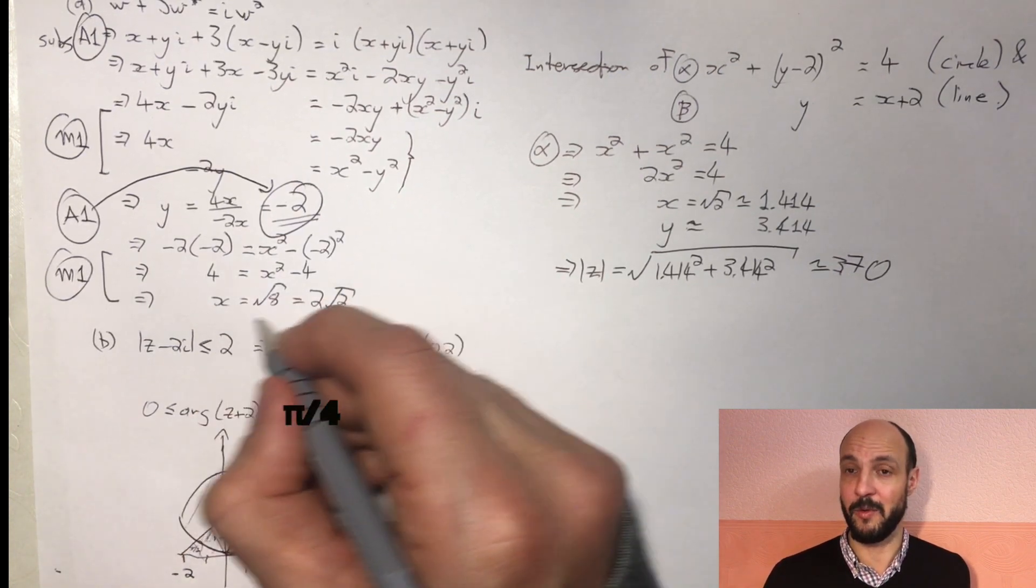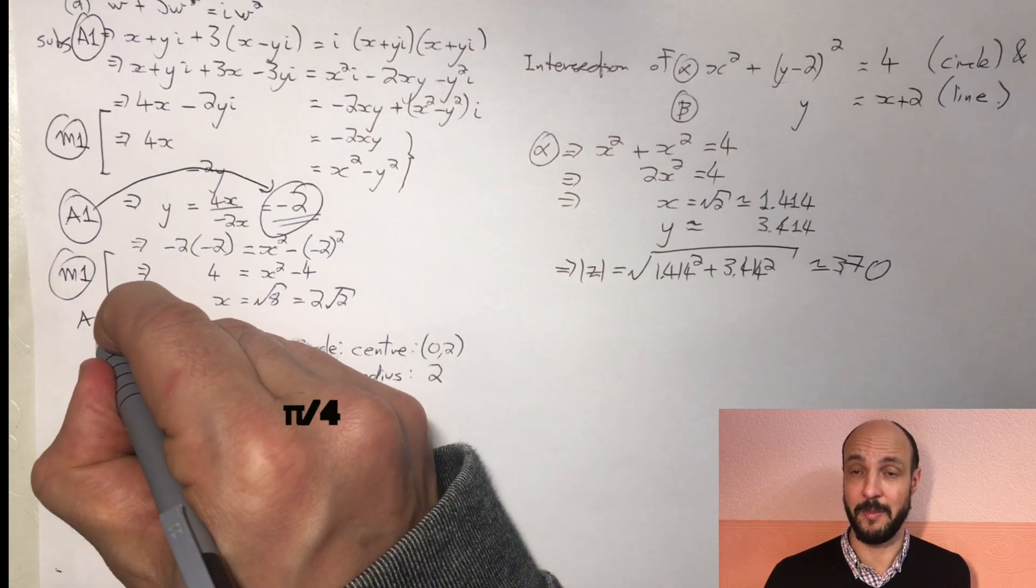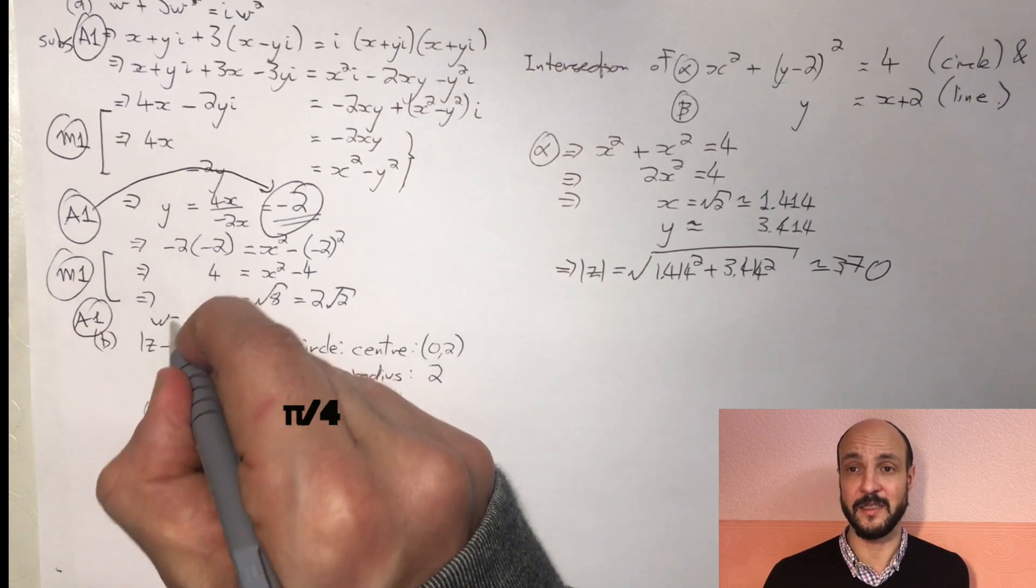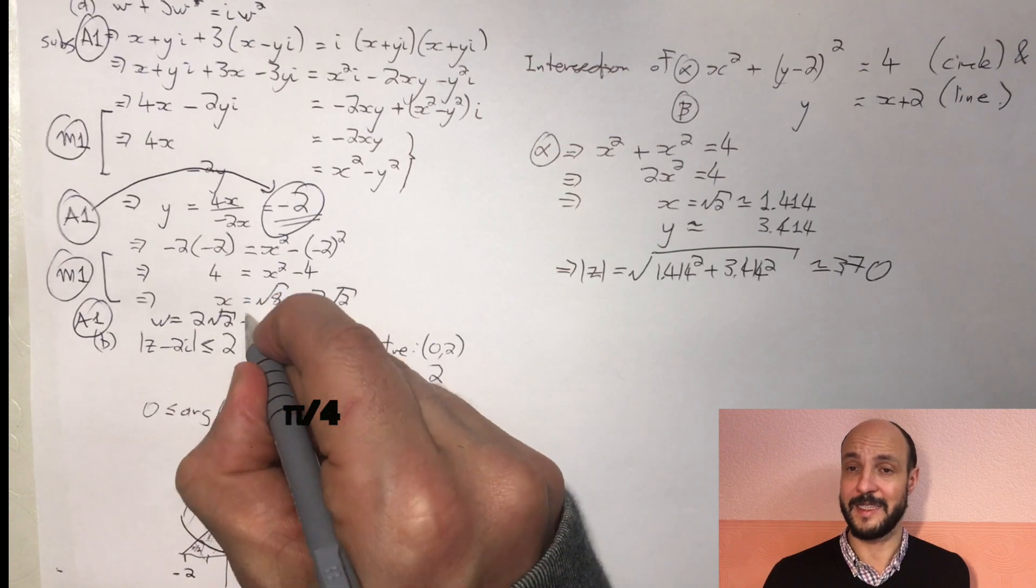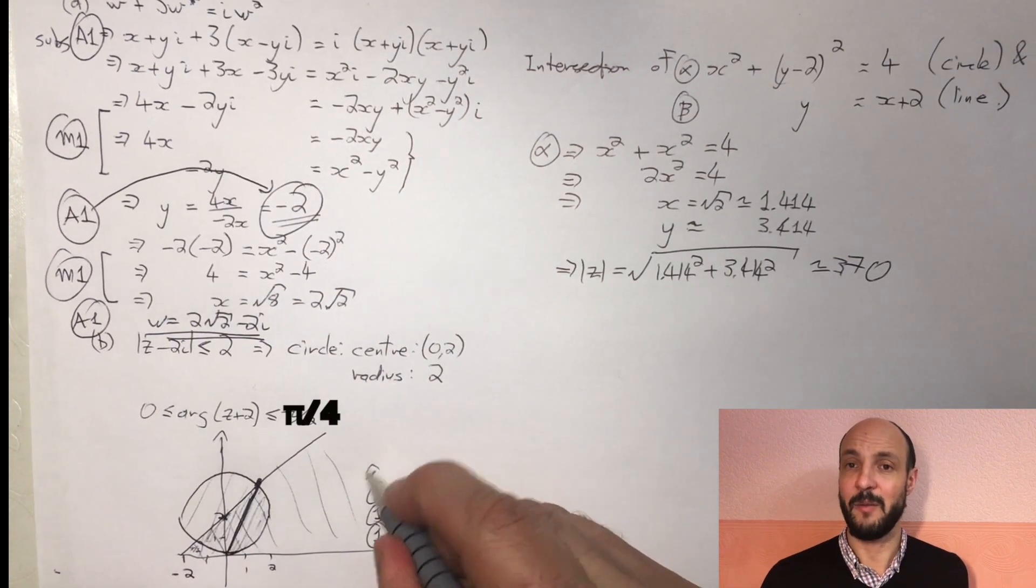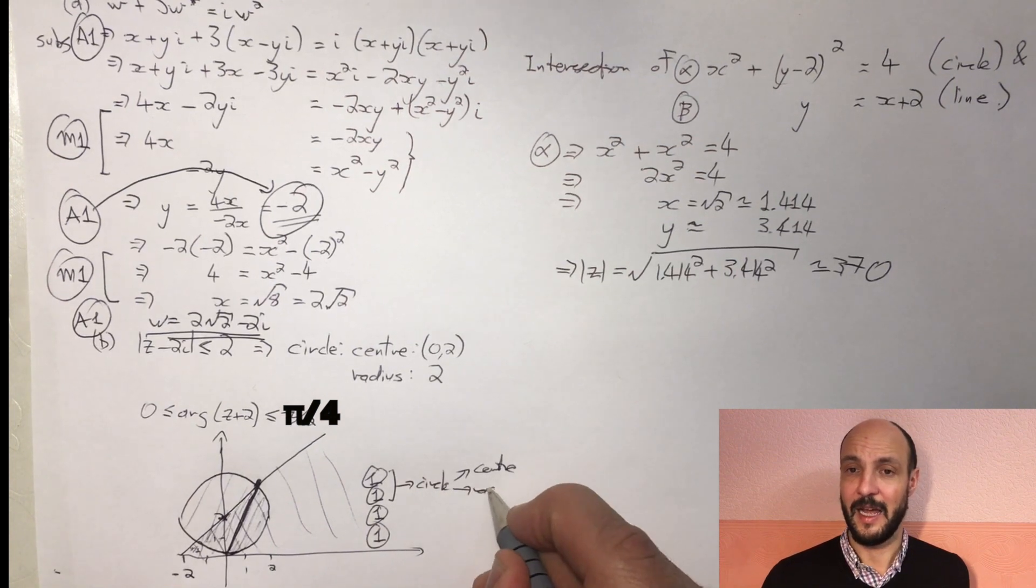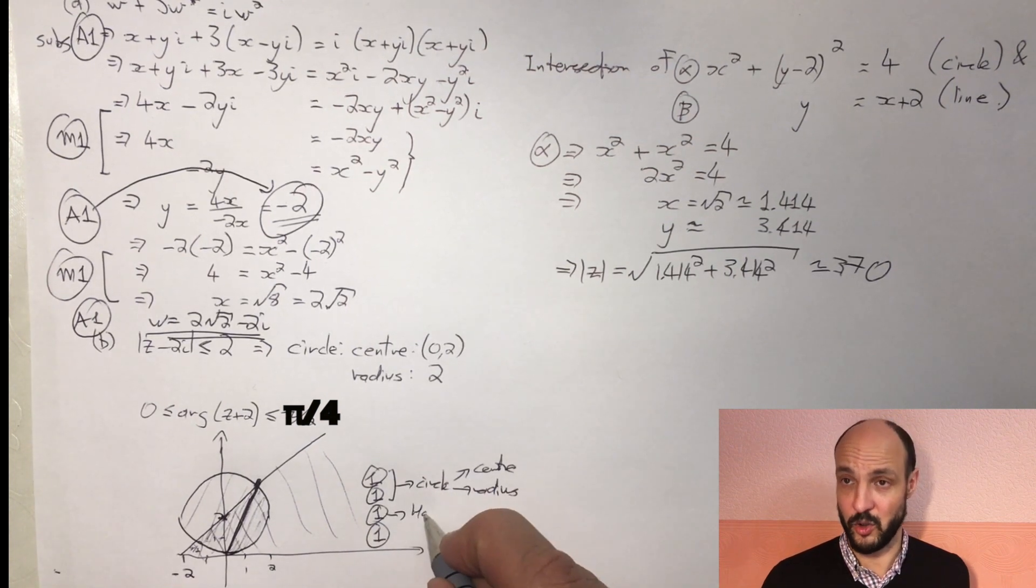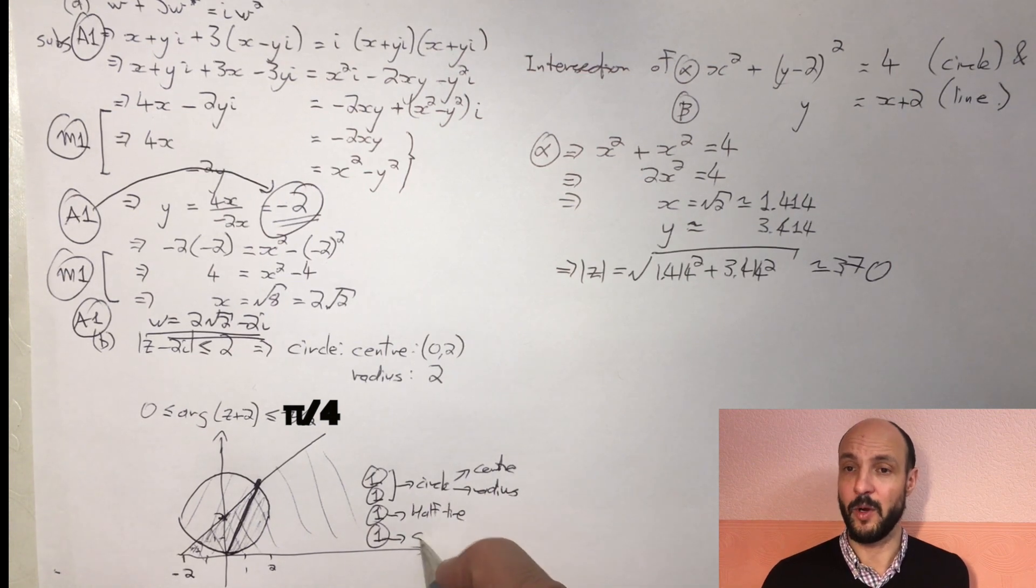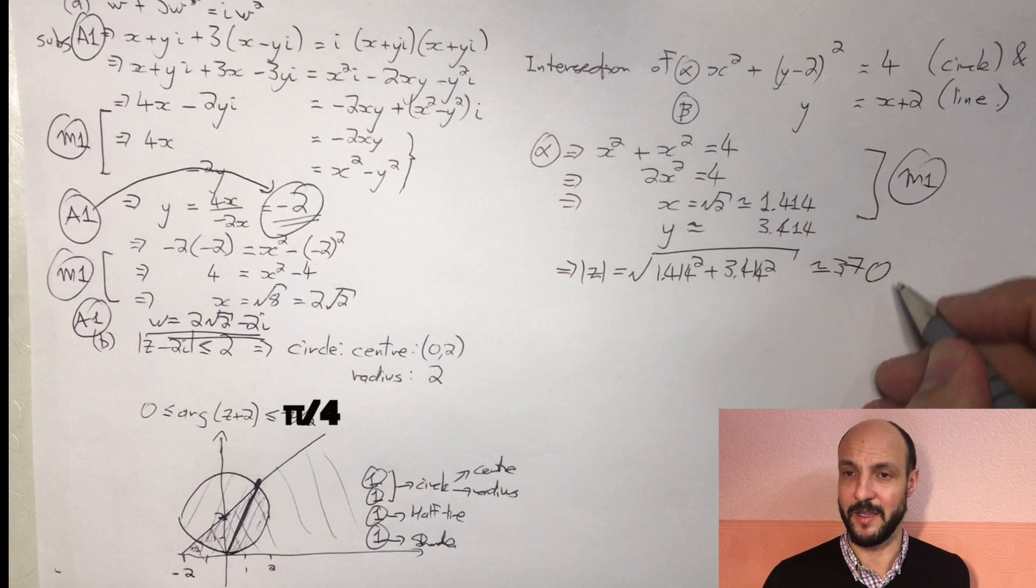And then in the second part we've got four accuracy parts on the picture: one for getting the center in the right place, one for getting the radius the right length, one for getting the half line starting from minus 2 on the x-axis, and one for shading it in correctly, shading in the correct place. And then we've got two more marks, six marks all together. We've got one method mark for using a suitable solution to find out the greatest magnitude, the greatest value of mod z, and then an accuracy mark for correctly getting 3.70.